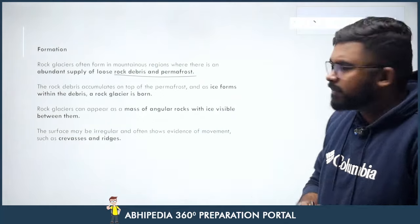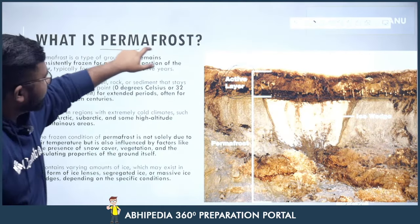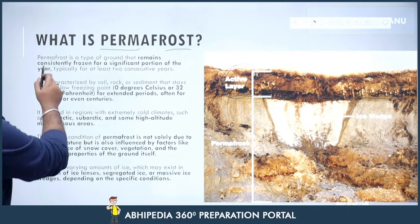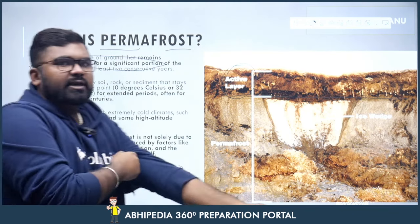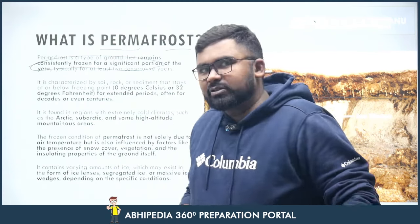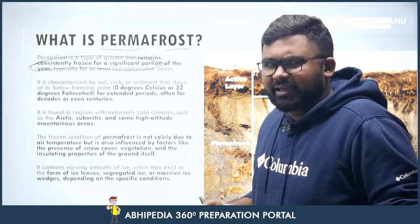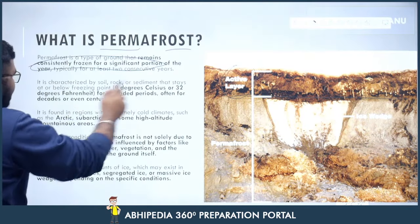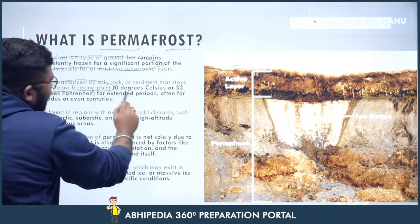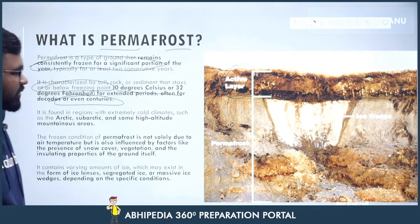Rock glaciers form where there is an abundant supply of loose rock debris and permafrost. Permafrost is a type of ground that remains consistently frozen for a significant period of time. For example, Yakutsk in Russia — spelled Y-A-K-U-T-S-K — is the coldest inhabited city, where the entire city is built on permafrost. It is characterized by soil, rock, and sediment that stays at or below freezing point (0°C or 32°F) for extended periods, often decades or even centuries. Similar permafrost zones can be found in Kashmir as well.